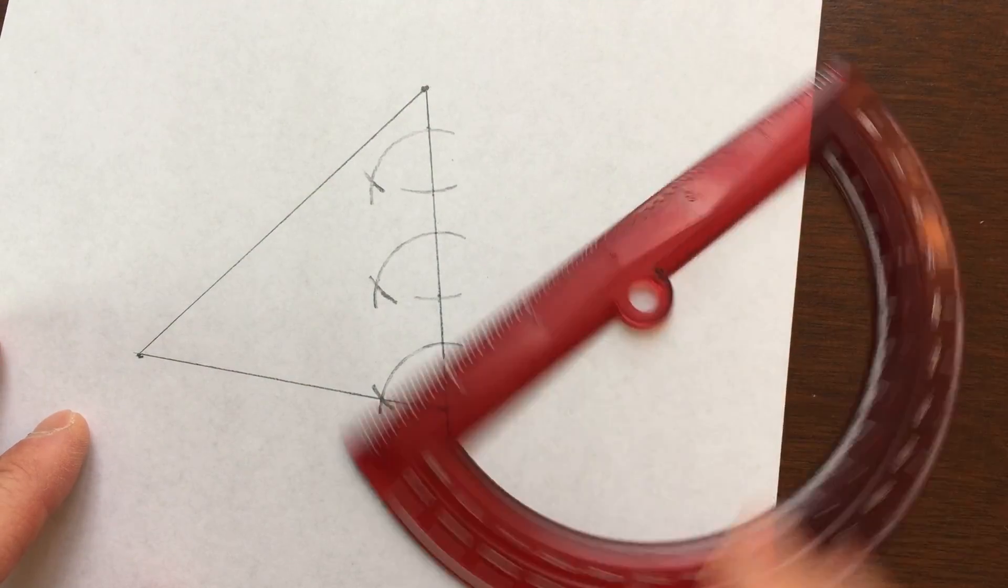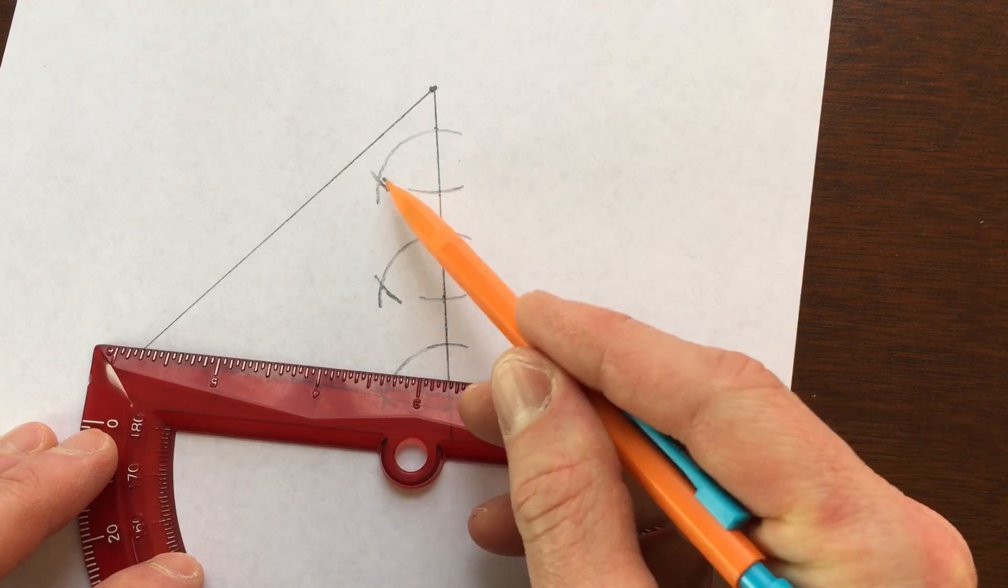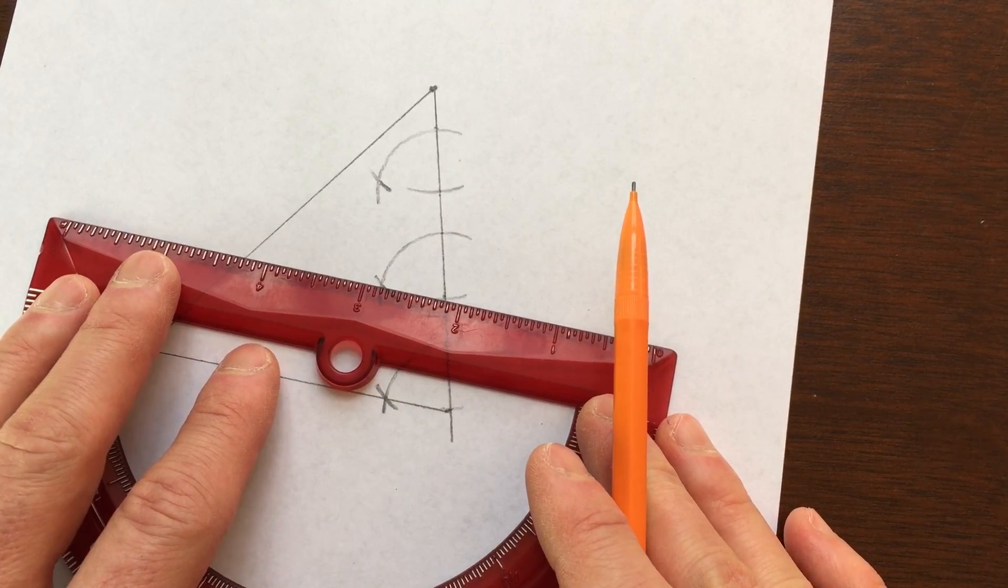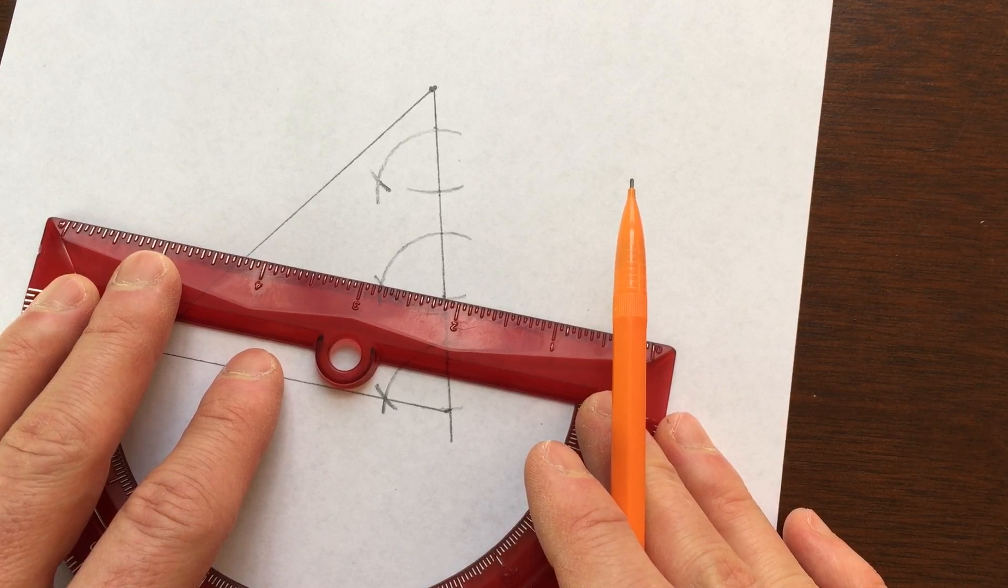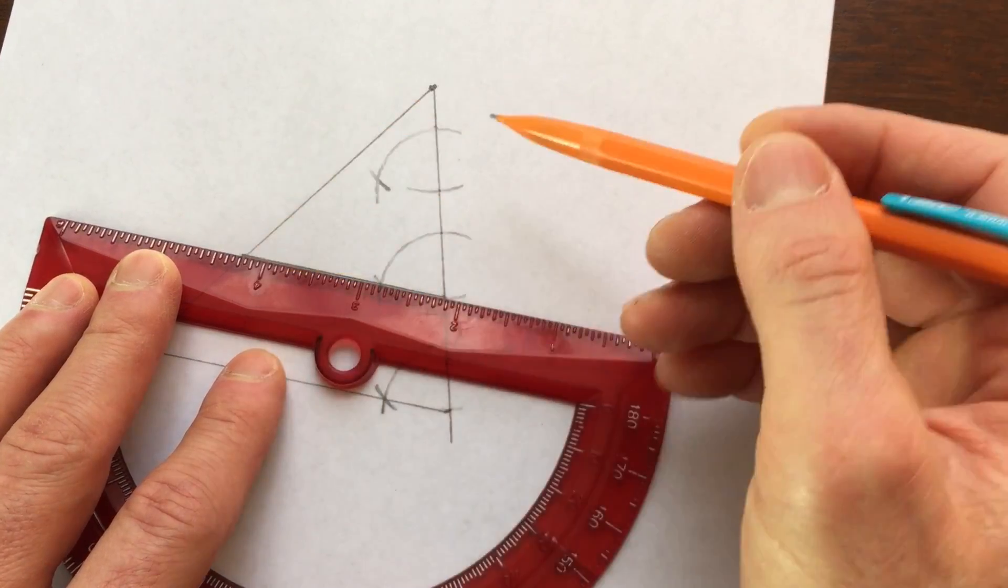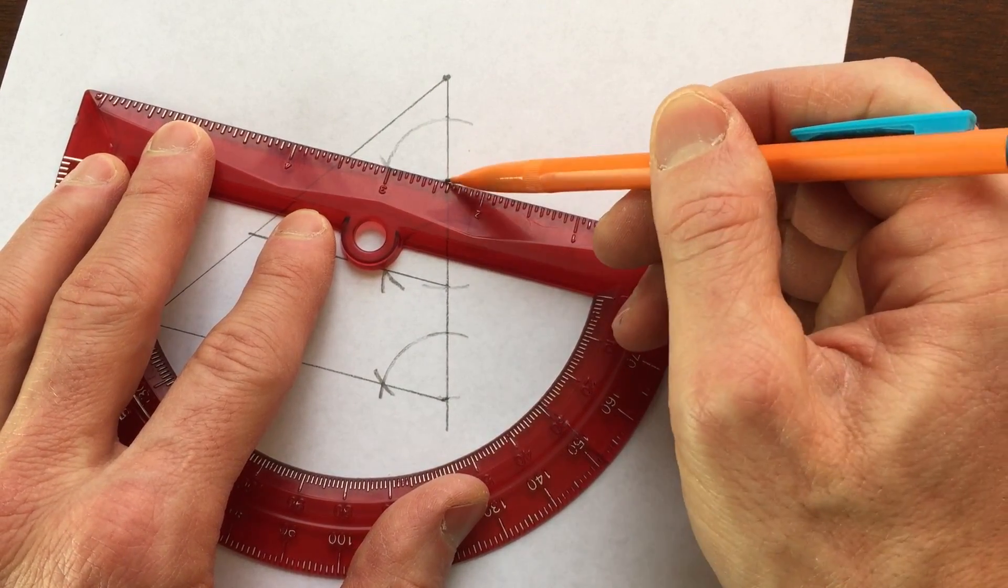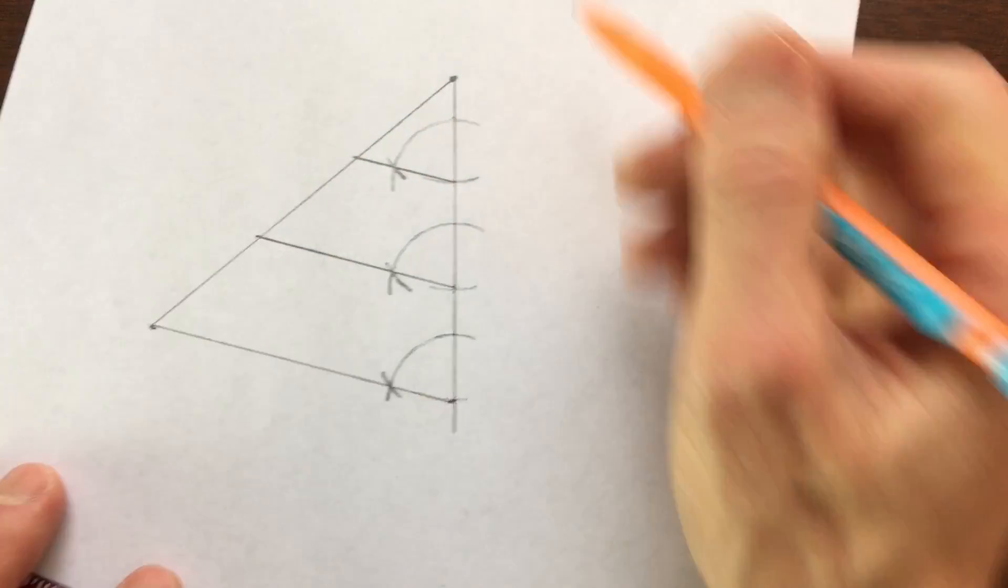Now all we have to do is draw a line through this point and this point, this point and this point, and we've got our parallel lines. So let me see if I can do that accurately here for us. So we've got, there you go, and there you go.